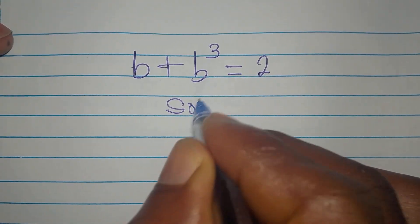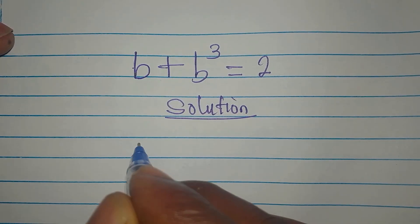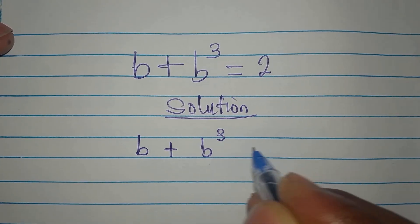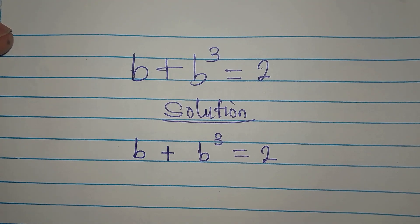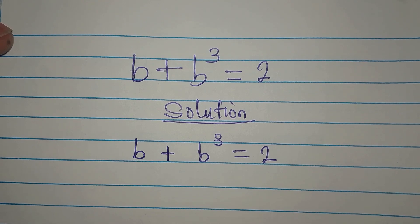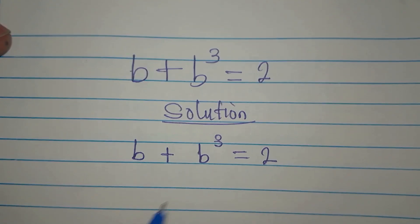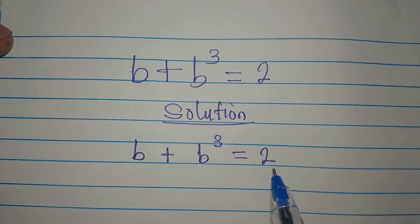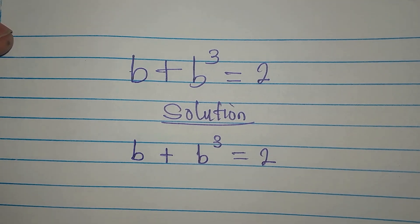Hi everyone. Okay, this is what we have: b plus b to the power of 3 equals 2. How do we deal with this? You might be tempted to factorize — b is common to them — but if you do that and this is not zero, you cannot proceed. So what do we do? Just sit back and learn with me.